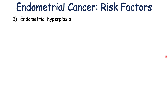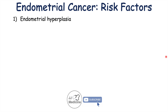The first risk factor is endometrial hyperplasia. Endometrial hyperplasia is an abnormal thickening of the endometrium, and this is essentially a pre-malignant thickening of the endometrium. So this is one step on the way toward endometrial cancer.